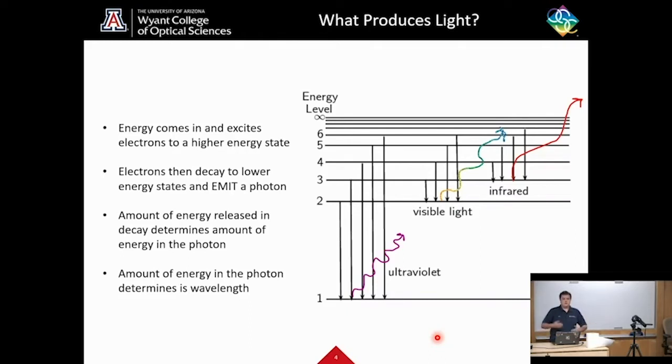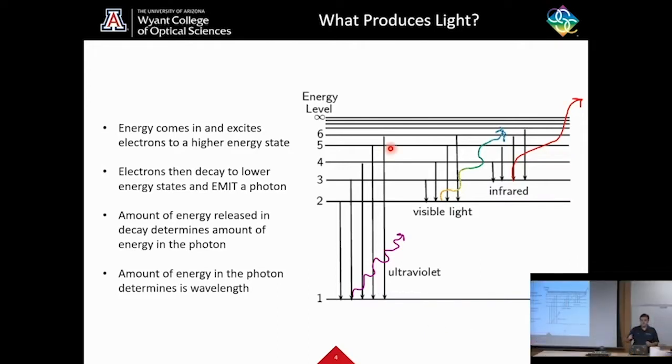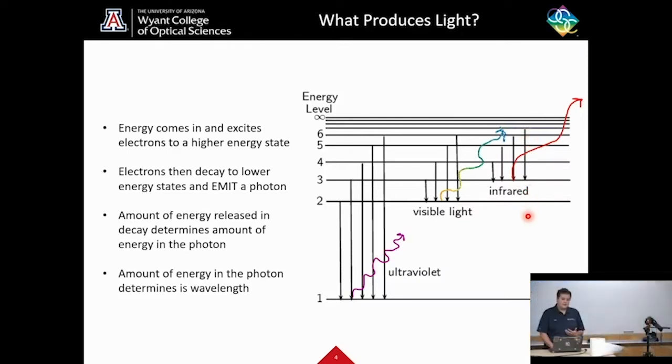Now, the wavelength of light is dependent on the amount of energy lost during this drop. So here you can see if you're dropping from the sixth level to the first level, something like this is going to give off ultraviolet light, which is very short wavelengths, much shorter than visible. Visible gives off from these levels over here. This is the light that we can see. Infrared gives off much lower energy and has much longer wavelengths, and is this transition level here.